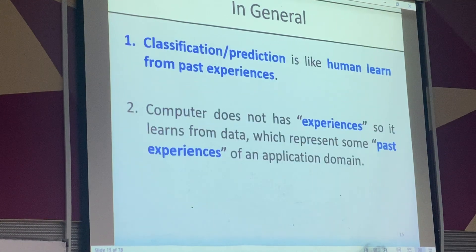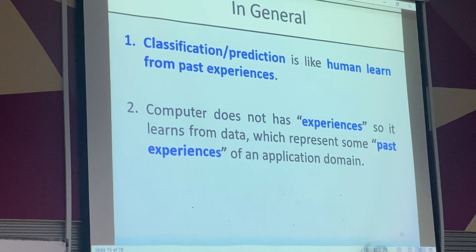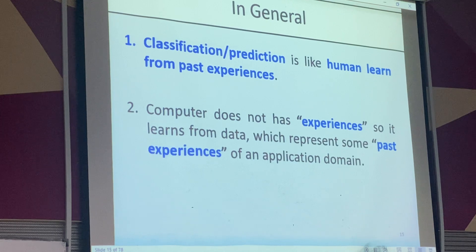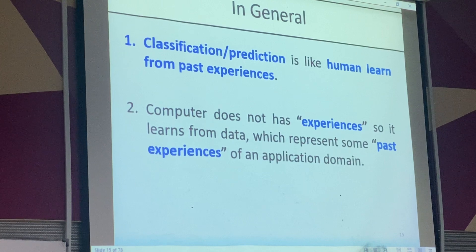This is classification — we have multiple classes and the supervised machine learning classifies unseen data into class A or class B. Computers don't have experience like humans, so we give them the experience through a dataset. The dataset acts like experience for the computer.